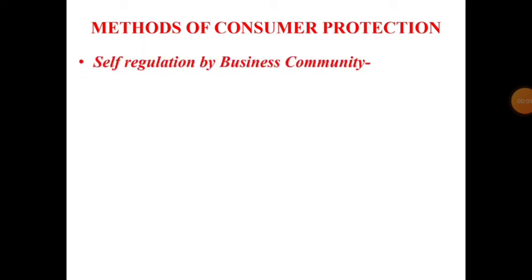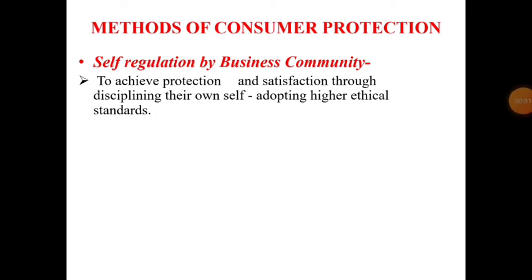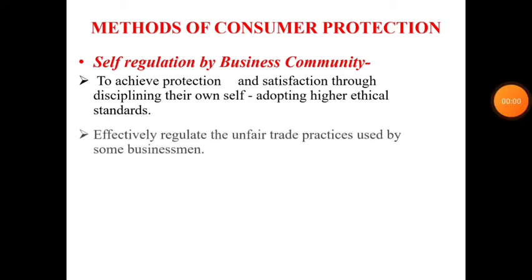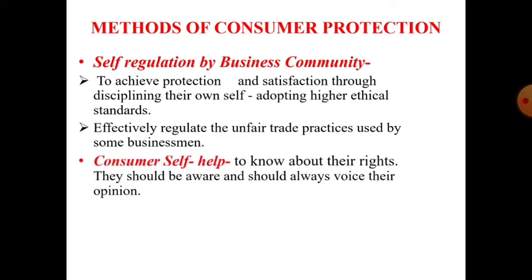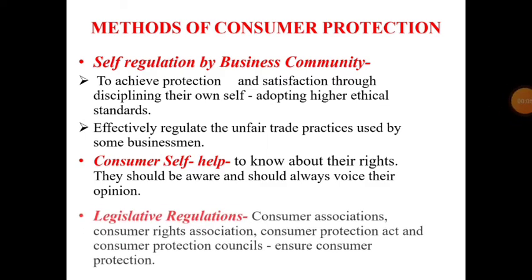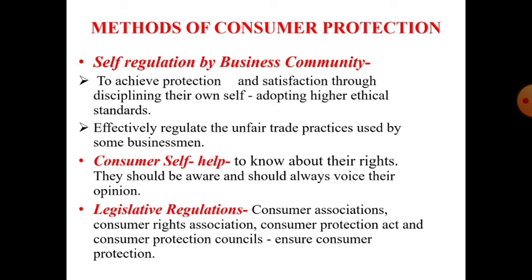So these are some consumer responsibilities. Next is methods of consumer protection. First is self-regulation by the business community — the business community helps achieve protection and satisfaction by disciplining themselves and adopting higher ethical standards. Trade associations should effectively regulate unfair trade practices. Second is consumer self-help — consumers should make efforts to know about their rights and always voice their opinion. Third is legislative regulations — consumer associations, consumer rights associations, consumer protection acts, and consumer protection councils are the bodies which ensure consumer protection.